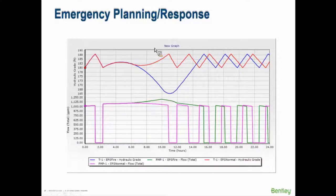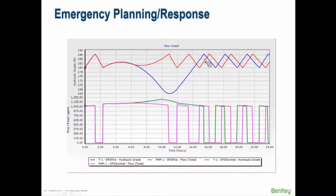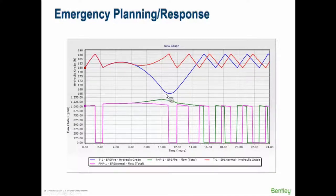For emergency planning, the red line shows the tank level on a normal day and the blue line shows what happens during a fire starting at hour six. You can watch how the model predicts the tank level will drop and then come back as more pumps are turned on to refill the tank. Eventually the system returns to the normal pattern, though during the fire the tank level drops very low.